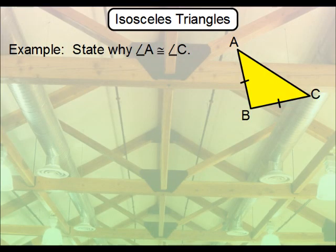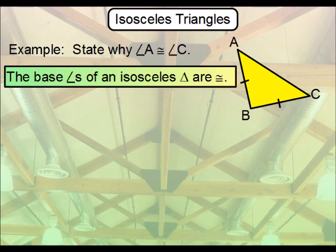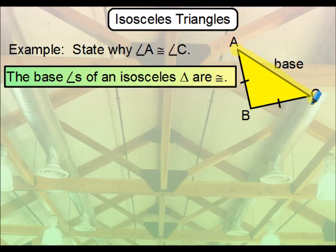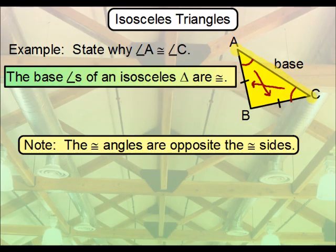So again, if you were given two sides that were congruent and asked to determine why angle A is congruent to angle C, it is because the base angles of an isosceles triangle are congruent. Note that this is the base — the one side not congruent to the other two. The base stretches from A to C, so those are your congruent angles. Note that these equal angles are opposite these equal sides.